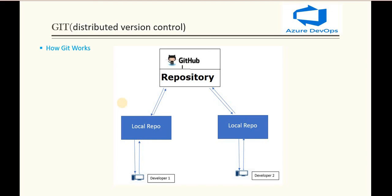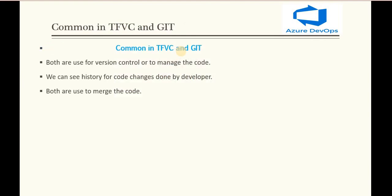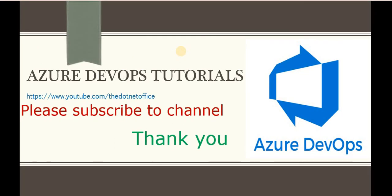So that is how centralized version control and distributed version control work. Now, what is common between these two? Basically both are version control systems used to manage code. We can also see the history of code changes done by developers in both systems. Both are used to merge code into the repository, and both provide a branching system. Every developer — whether one or a full team — can work with both TFVC and Git. So those are the common things between the two. That's it for this tutorial. If you have any questions or doubts, please comment. Thank you.